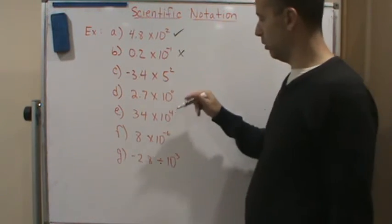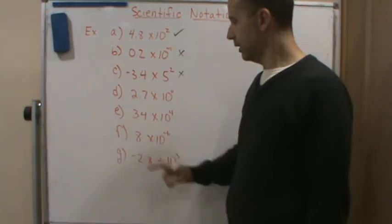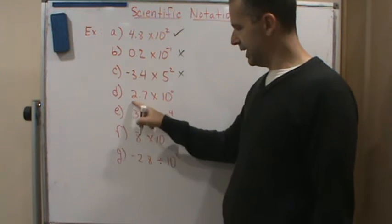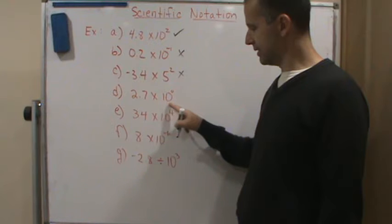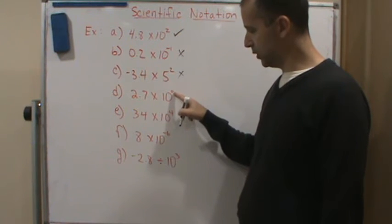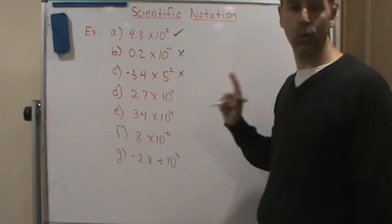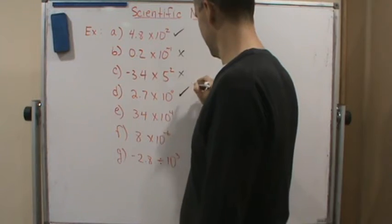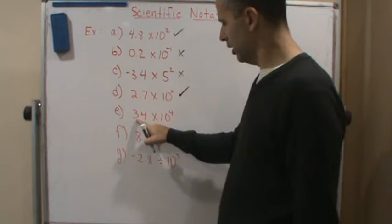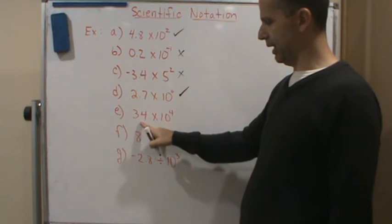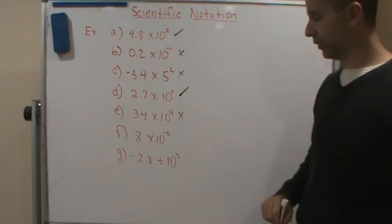D: is this a number between one and ten? Yes. Is this a power of ten? Yes — even though it's to the zero, this is technically one, but it's still written as a power of ten. It's the way it's written that matters, so this is scientific notation. Here, is this a number between one and ten? Nope — then it's not in scientific notation.